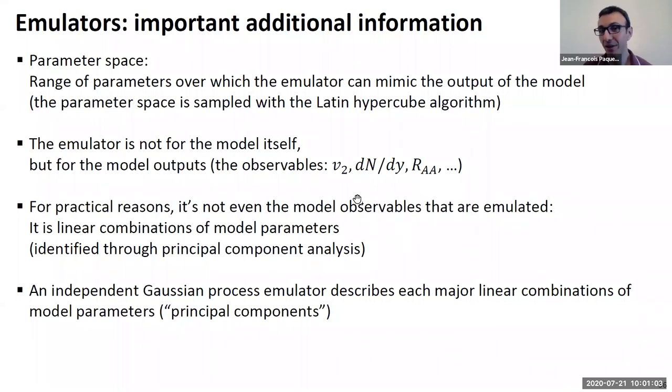And actually, in practice, it's not even the V2 and the dN/dy that we're modeling, actually. Typically, we do a principal component analysis. And this is for a variety of reasons. But in part, it's for efficiency. So it's sufficient to describe a small number of linear combinations of your observables to capture, essentially, most of your model's dependence on the parameters. So you do a Bayesian parameter estimation, you end up with a combination of your observables, or really rescaled observables. And then this is what you train a Gaussian process emulator on.